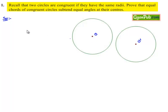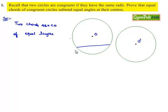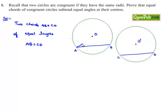Let us consider two chords AB and CD of equal length in the two circles. We draw AB and CD such that both are of equal length. Now we need to prove that the angles subtended by them at the centers are equal, that is, angle AOB is equal to angle CO'D.